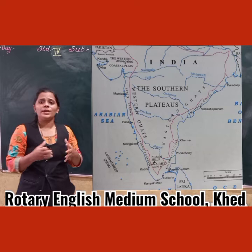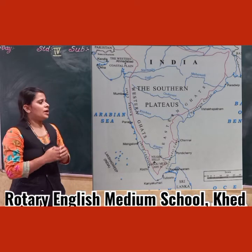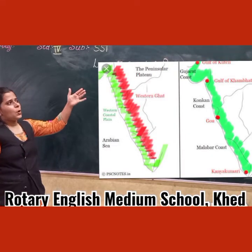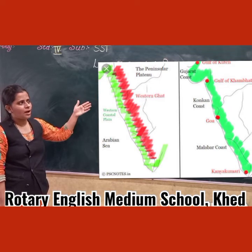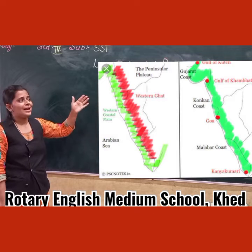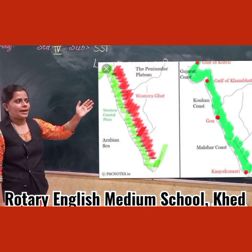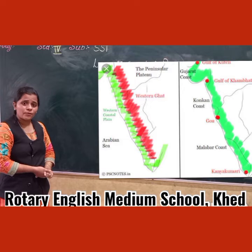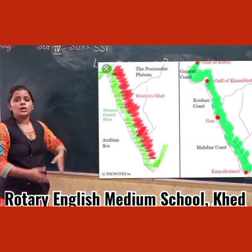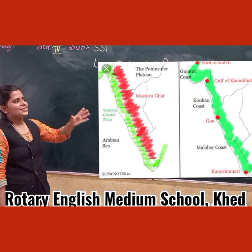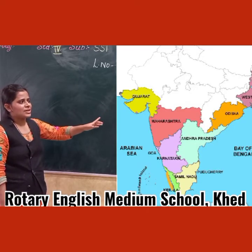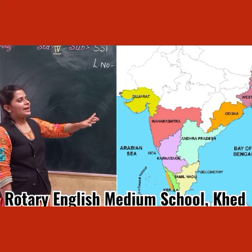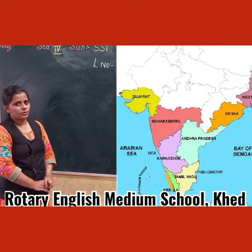Now, my dear children, as you know, India has a long coastline. The Western Coastal Plain lies between the Western Ghats and the Arabian Sea. It stretches from Gujarat to Kerala, passing through the states of Maharashtra, Goa, Karnataka, and ends at Kanyakumari in the south.